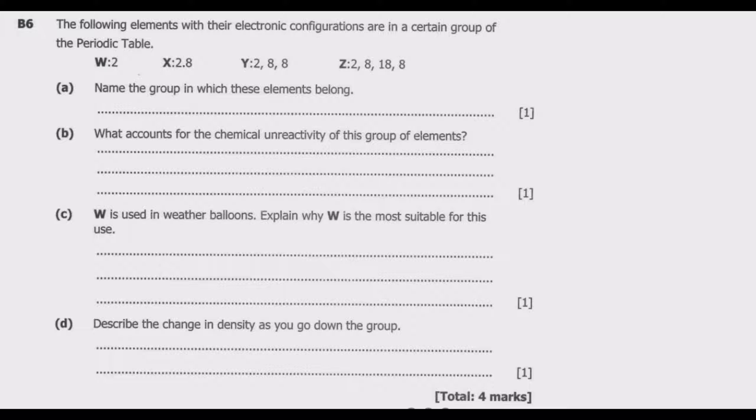If you look at this, you notice that W has 2, then we have 8, then 8, then 8. So what this tells us is these elements have a complete outer shell, meaning they are from group 8.